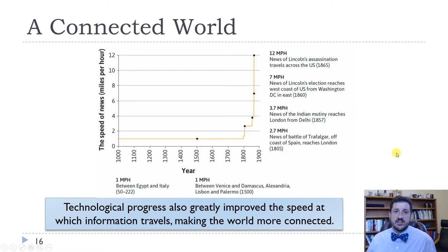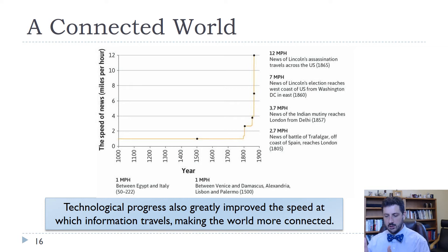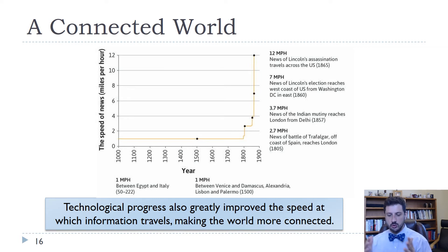Another way to look at this is how fast information travels. Information basically traveled at about one mile per hour going back to about 1800. People can walk a mile an hour very easily. If you think about the marathon runner in ancient Greece, there are some times where information could move more quickly. But basically, events were going to travel at about one mile an hour in terms of how fast people knew about them.